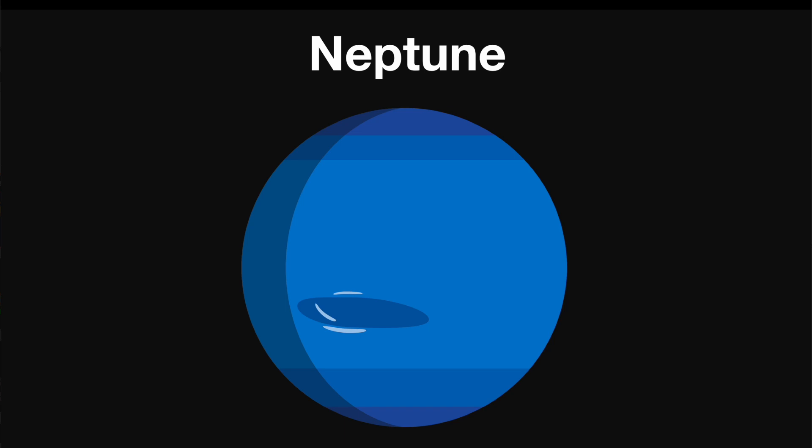Neptune is the furthest planet from the Sun. This planet is made of dense gas and is 17 times as big as the Earth. It's also a blue colour.